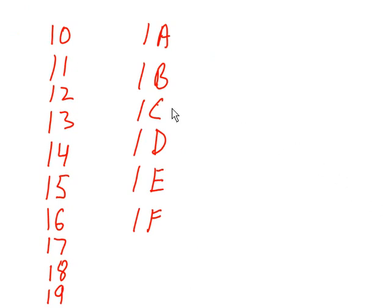Then it increments. When I finish with F, higher numbers are represented by taking column 2 and incrementing it by 1. Now I've got 10, 11, 12, 13, 14, yadda yadda yadda, all the way down to 1F.